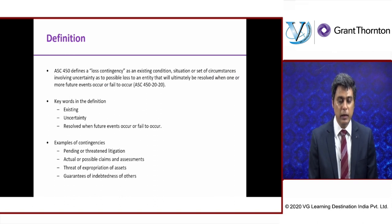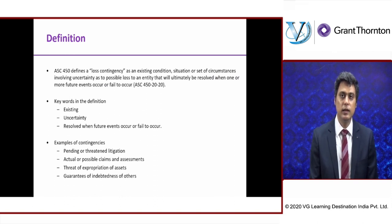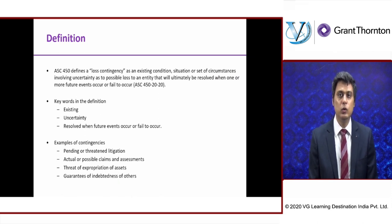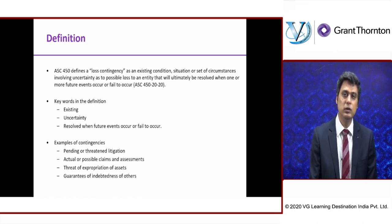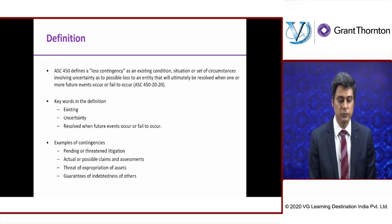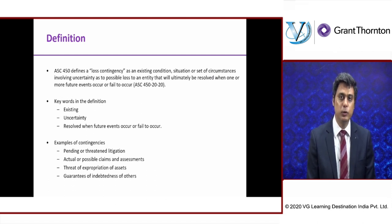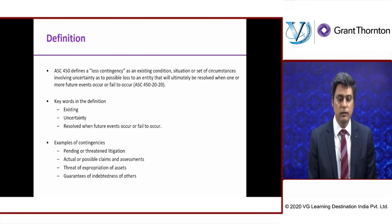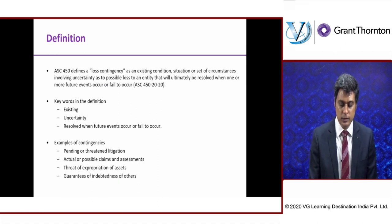Examples of contingencies include: pending or threatened litigation — somebody has filed a case against your company and you don't know whether you'll win or lose; actual or possible claims and assessments; threat of expropriation of assets; and guarantees of indebtedness of others. There are multiple examples like this — this is just an illustrative list.